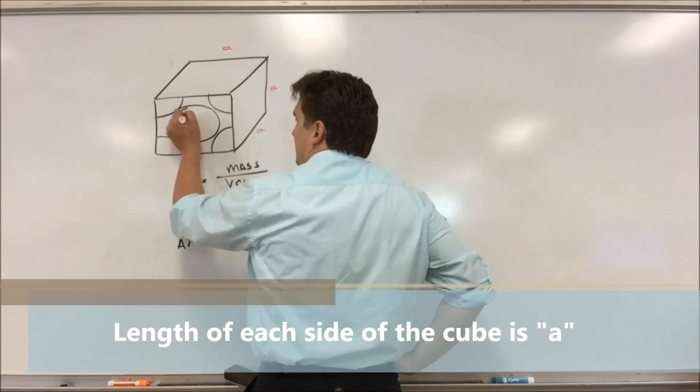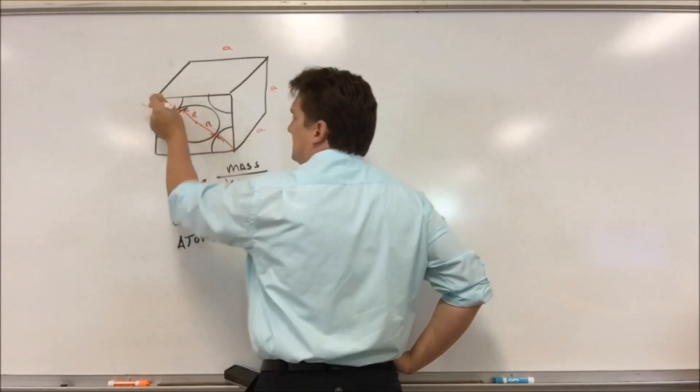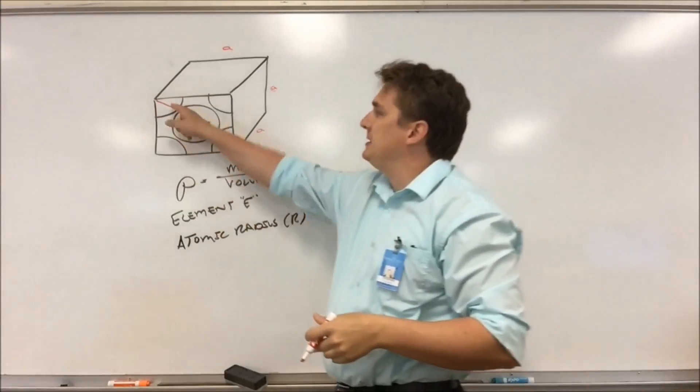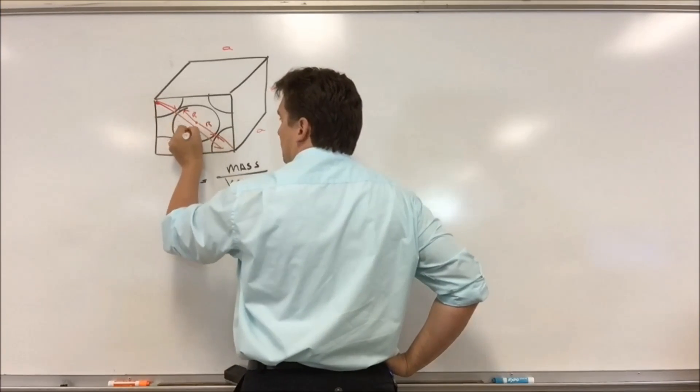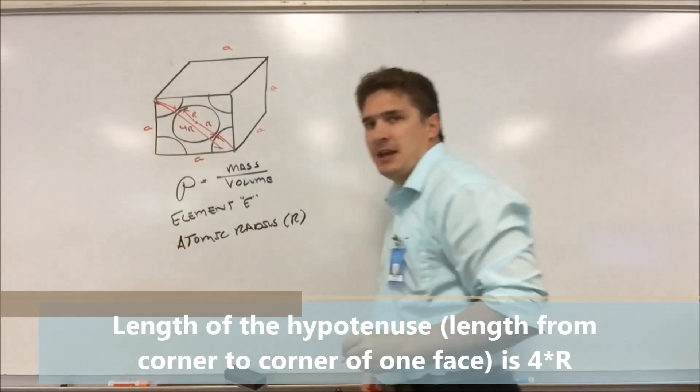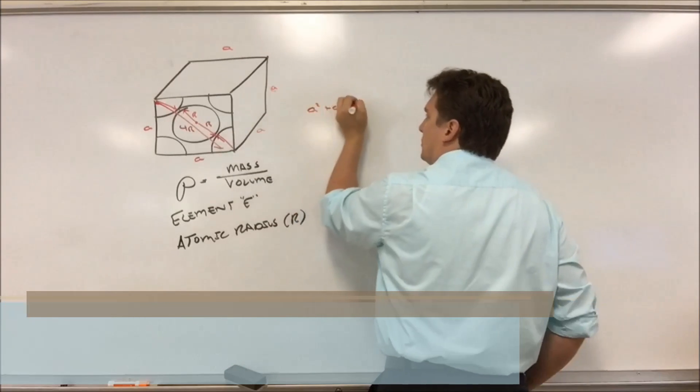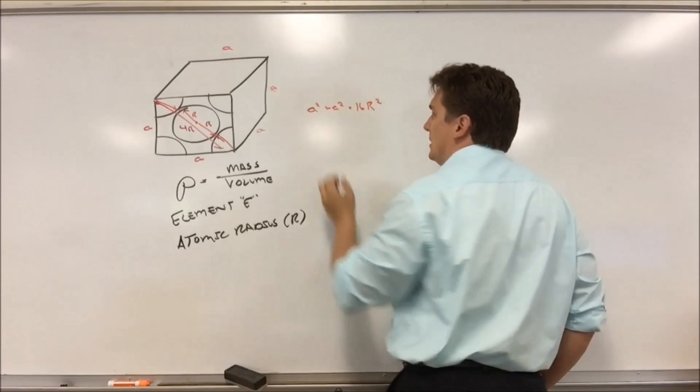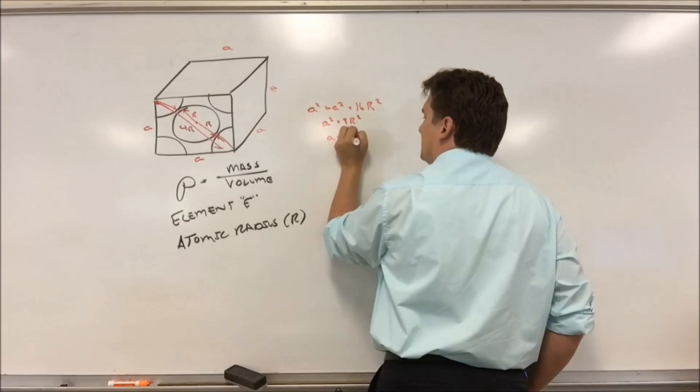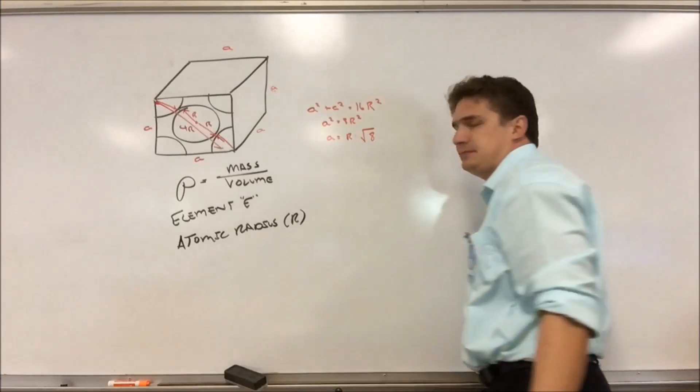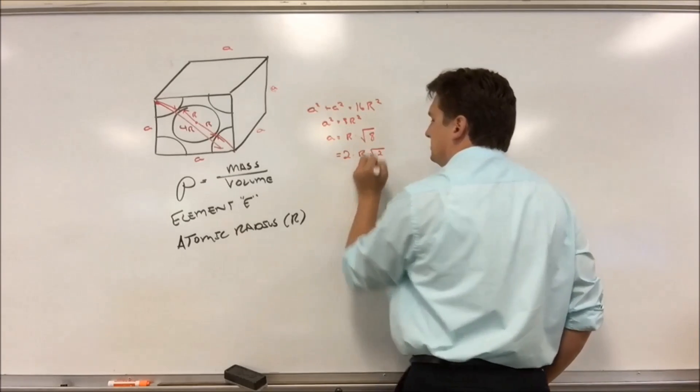So each atom has some radius R. And looking at this diagram, we can see that the distance from diagonal to diagonal across this is going to be 4R. So this length here is 4R. Now, the length of each side of the face is A. So if we use Pythagorean theorem, we get A squared plus A squared equals 4R squared or 16R squared. So that gives us that A squared is 8R squared. So A is just R times the square root of 8. We can simplify this further to give us that this is 2 times R times the square root of 2.